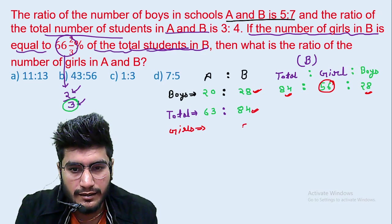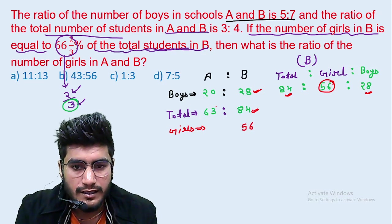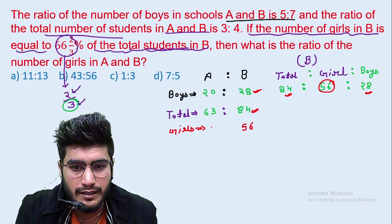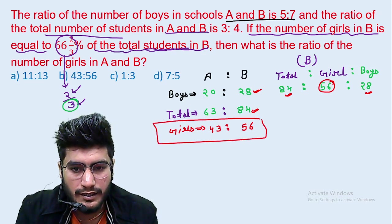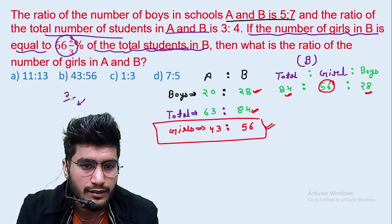84, if we do 28 minus, what will we get? 56. In this case, 63, if we do 20 minus, what will we get? 43. And this is our question answer. What we need, the ratio is B option. Correct answer.